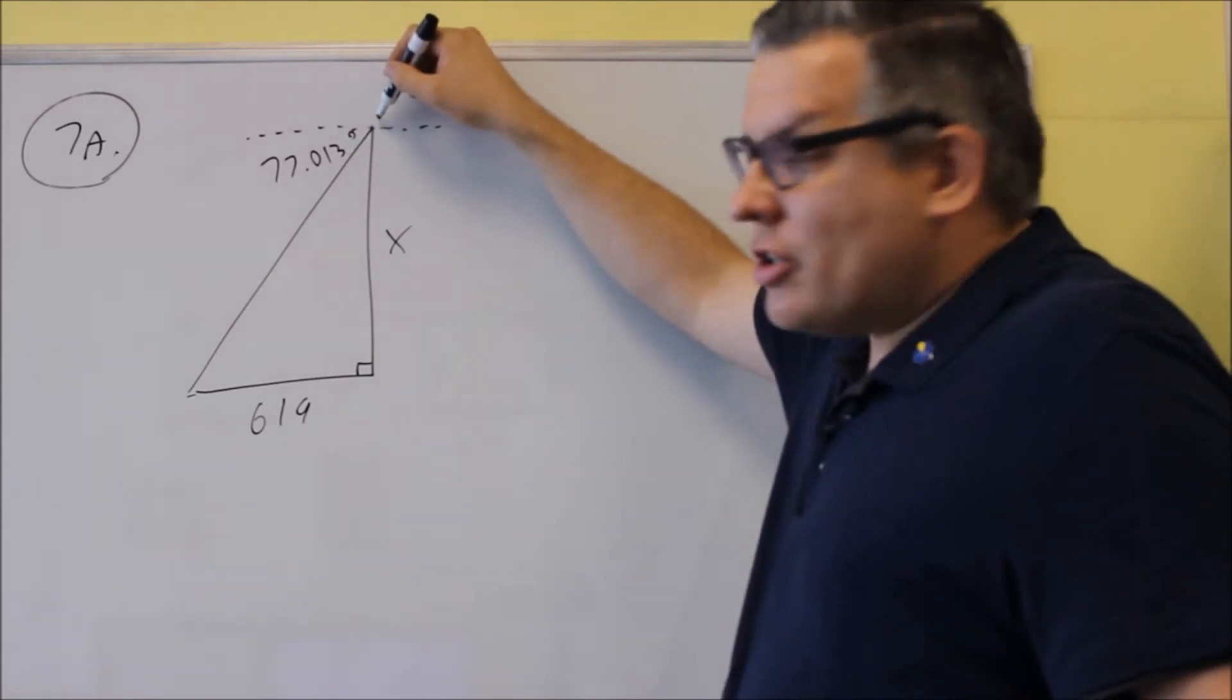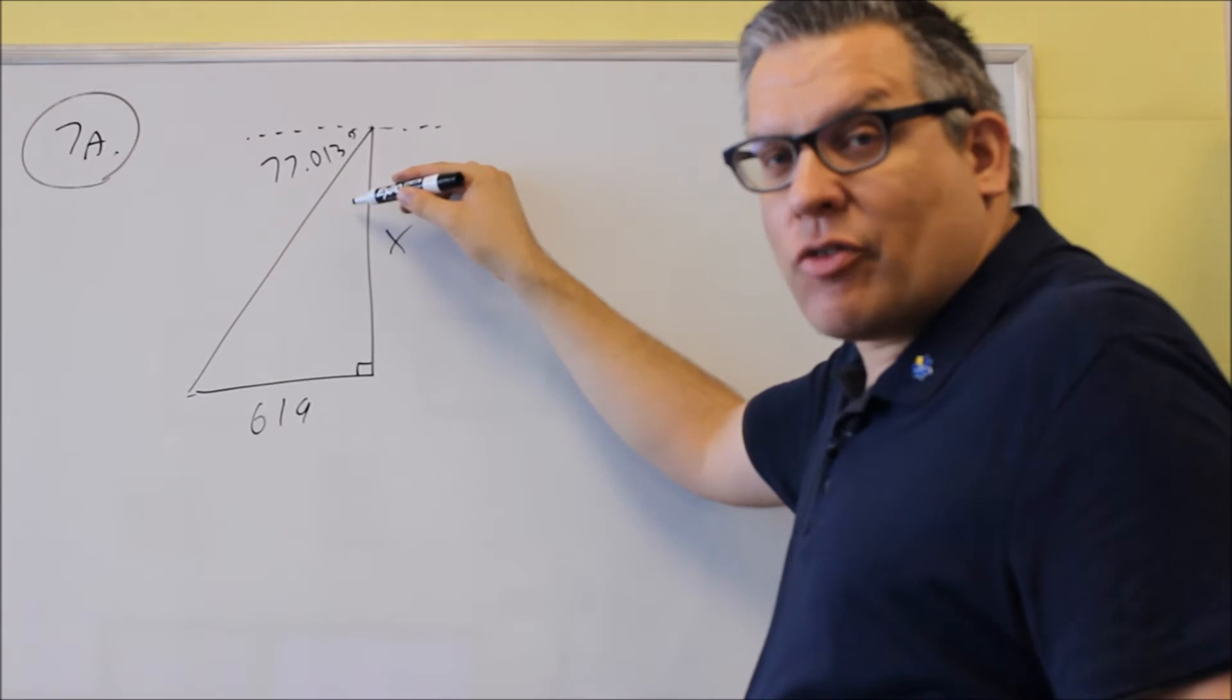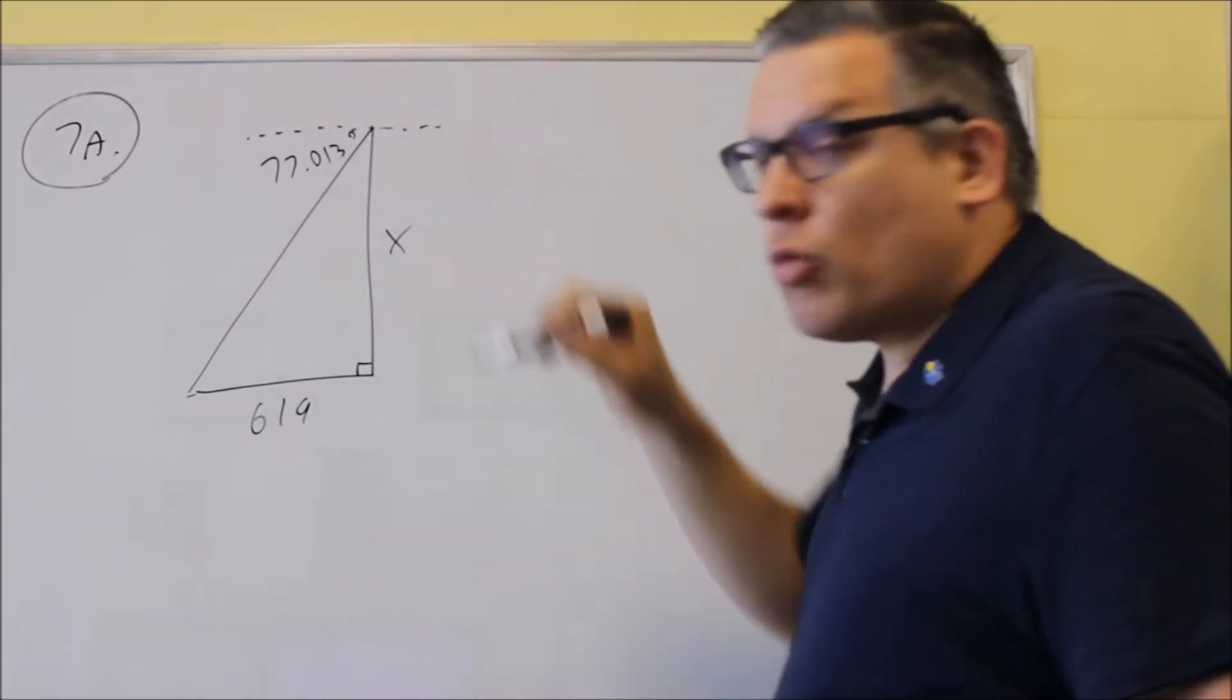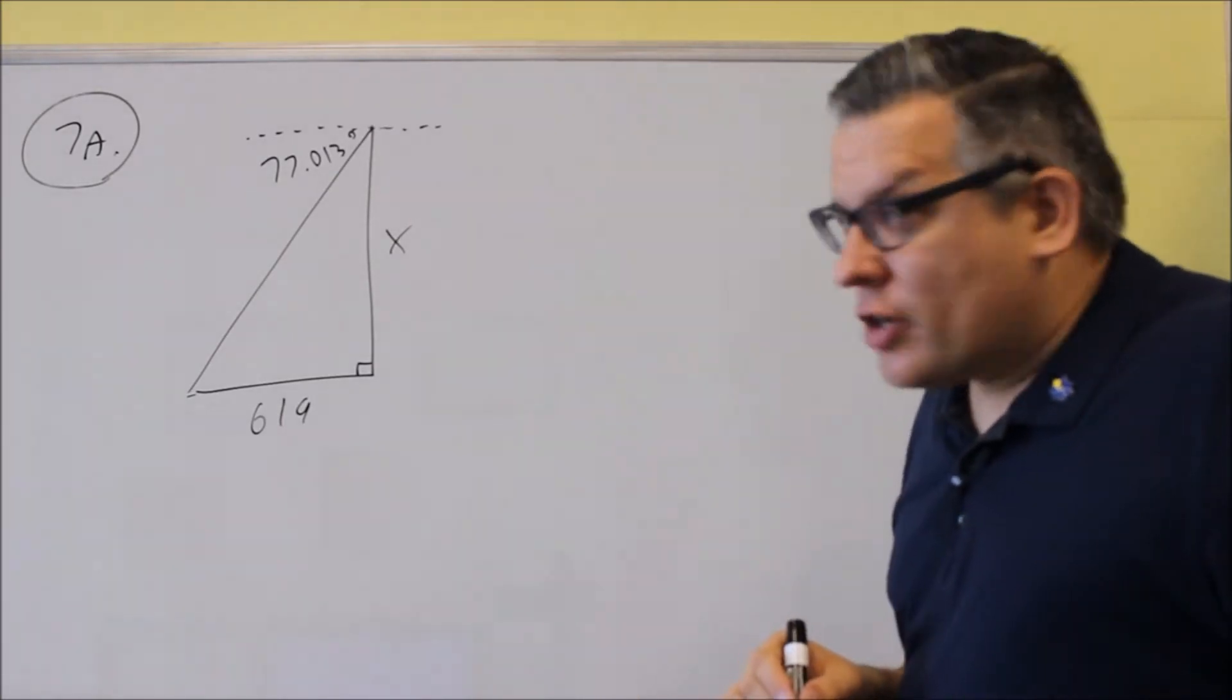So looking down, angle of depression means it's looking down. This angle inside is not going to be 77.013. The outside one is, because it's got to be measured from the horizontal when you have angle of depression.